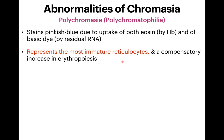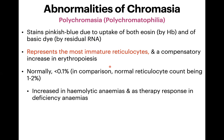Polychromatophils represent the most immature reticulocytes. Not every reticulocyte appears polychromatic — only the most immature ones. They indicate a compensatory increase in erythropoiesis. Normally, polychromatophils are less than 0.1% in adults, compared to a normal reticulocyte count of 1–2%. They are roughly one-tenth of the reticulocyte count. They are increased in hemolytic anemias as well as in therapy response in deficiency anemias.